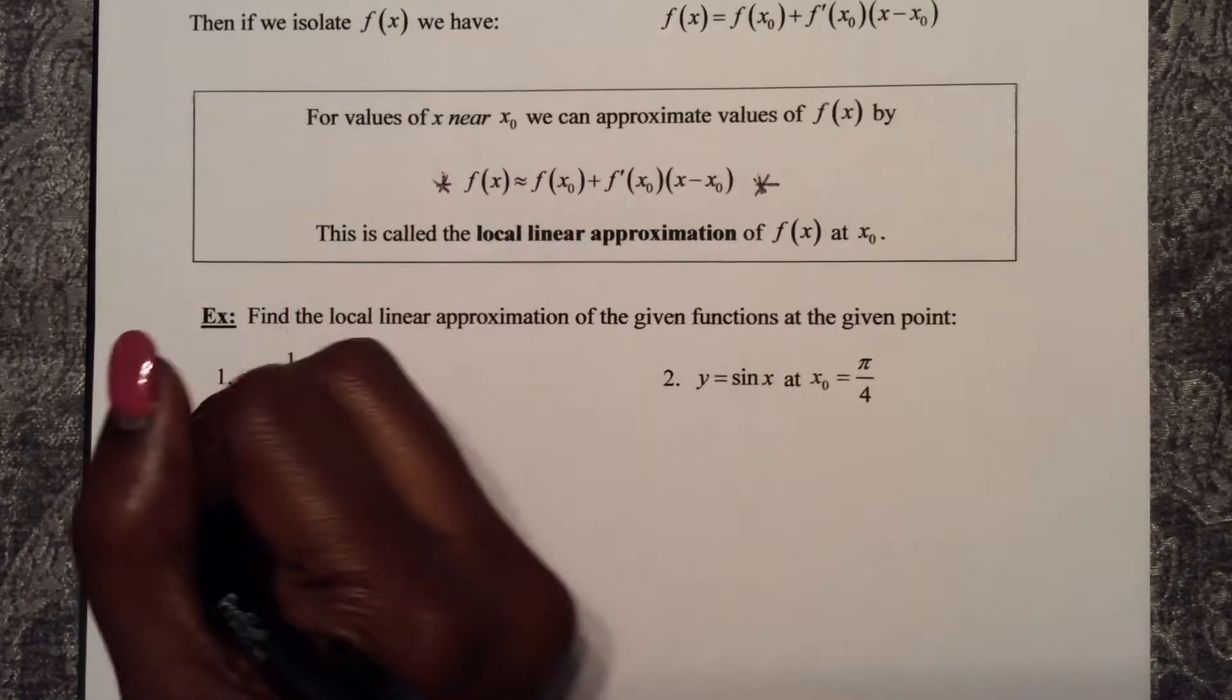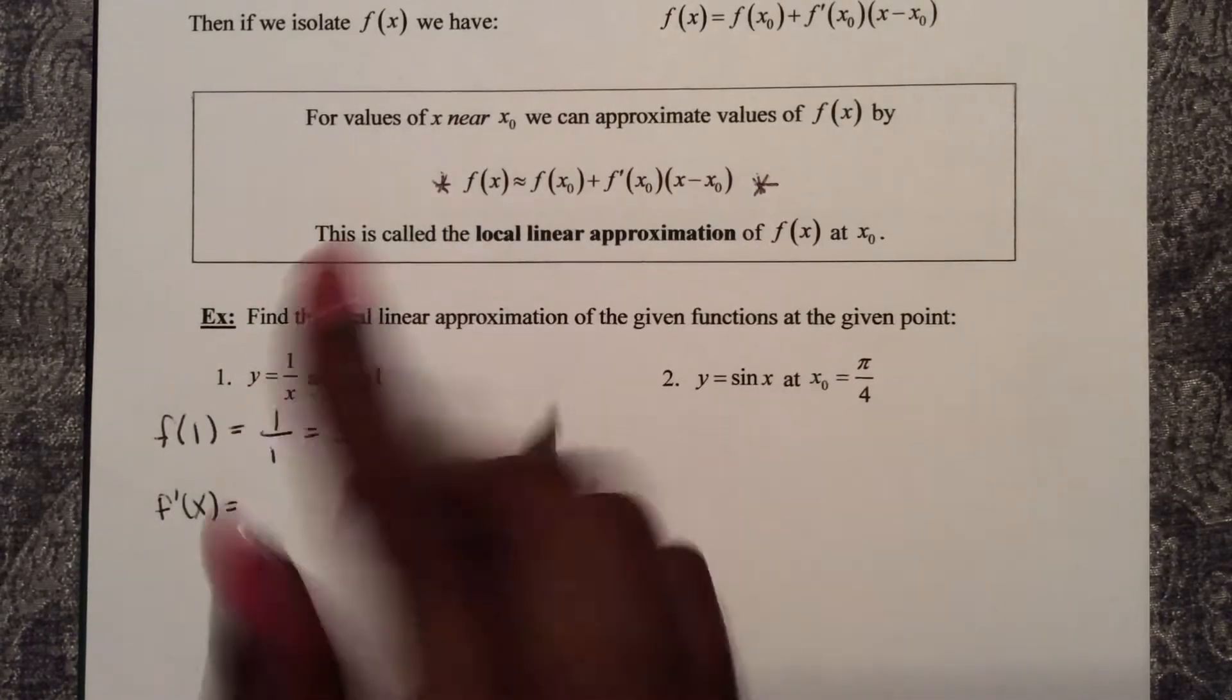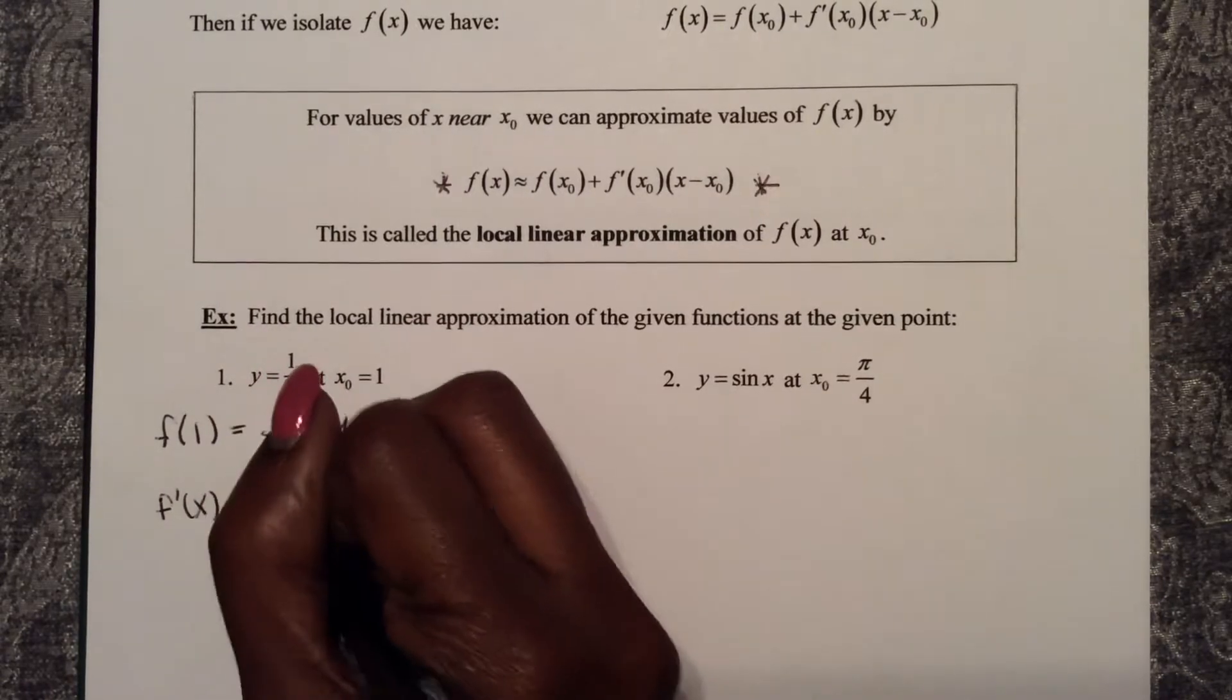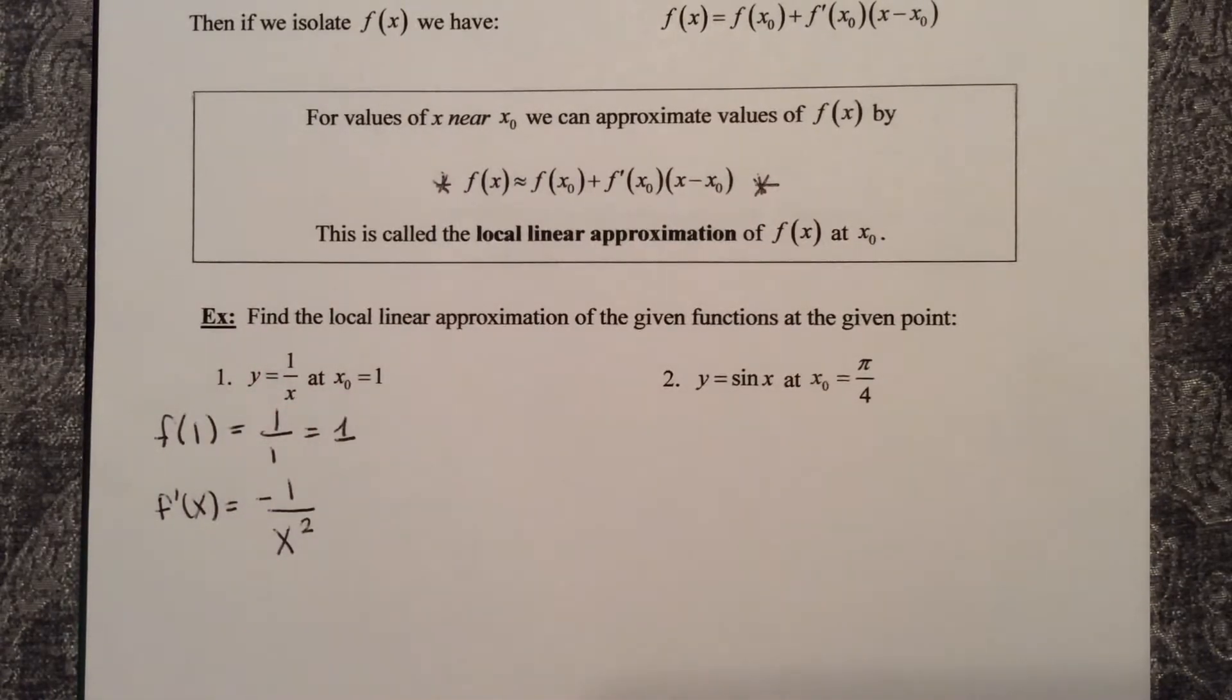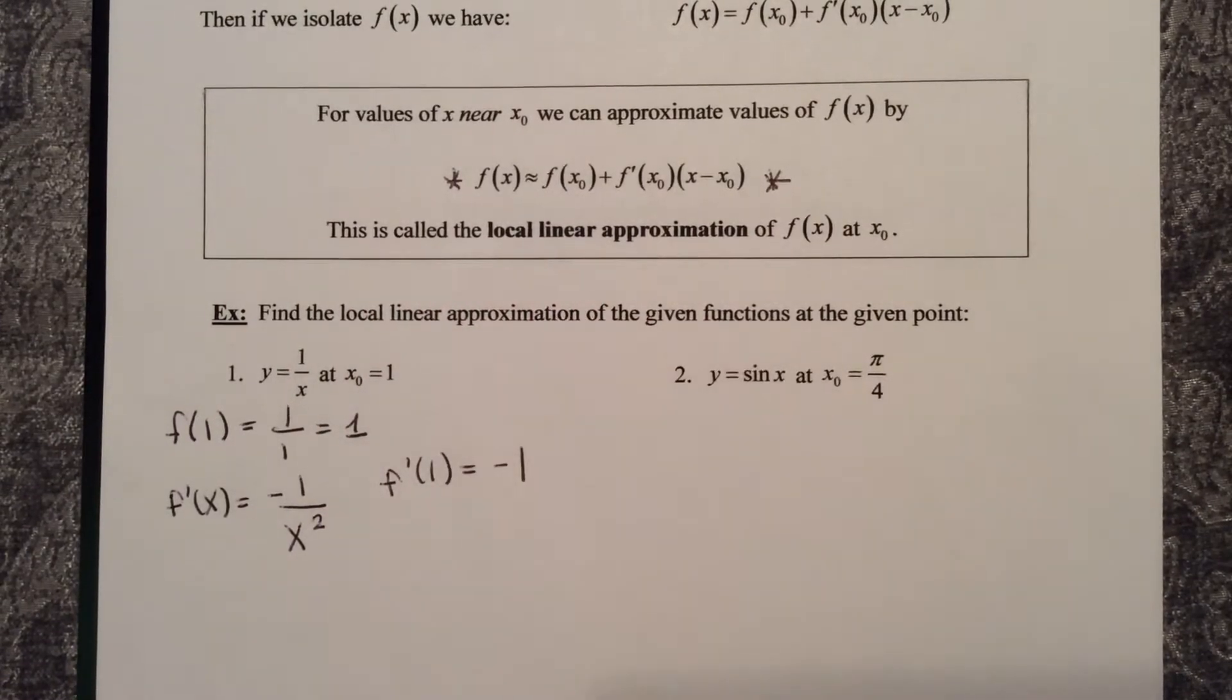f prime of x - now this is the same as x to the negative 1, so it's negative 1 x to the negative 2, which is negative 1 over x squared. So that tells us that f prime of 1 is negative 1.